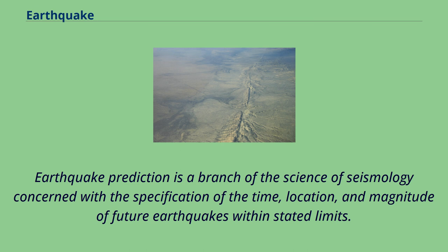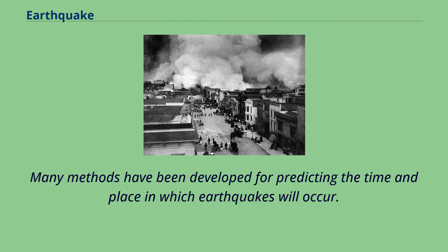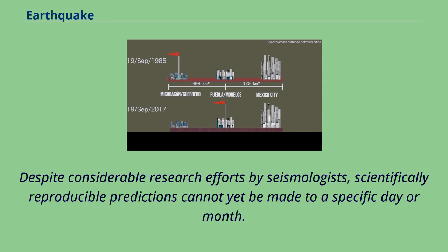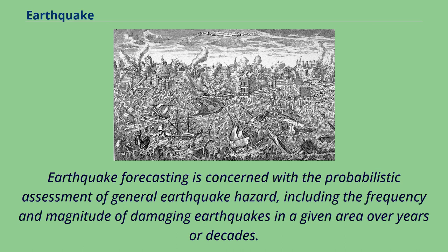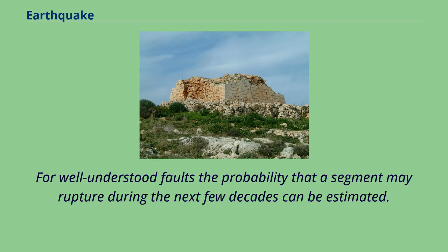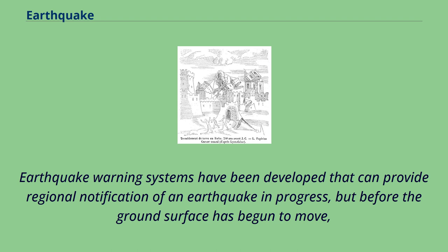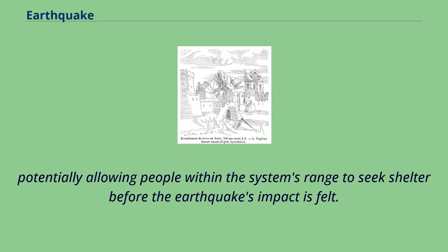Earthquake prediction is a branch of seismology concerned with the specification of the time, location, and magnitude of future earthquakes within stated limits. Despite considerable research efforts, scientifically reproducible predictions cannot yet be made to a specific day or month. Earthquake forecasting is concerned with the probabilistic assessment of general earthquake hazard, including the frequency and magnitude of damaging earthquakes in a given area over years or decades. Earthquake warning systems have been developed that can provide regional notification of an earthquake in progress before the ground surface has begun to move, potentially allowing people to seek shelter before the earthquake's impact is felt.